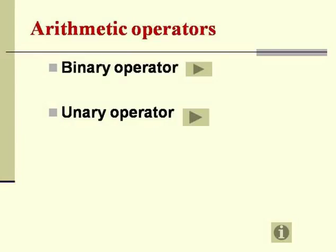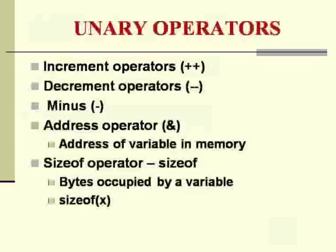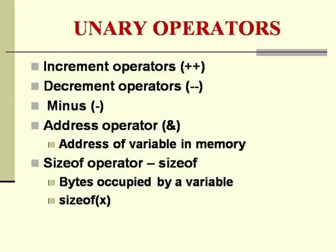Binary operators are ones which require a minimum of 2 operands for their operation. Next, we have what is called the unary operators. Unary operators require only 1 operand for their operation. They cannot be used for an operation on 2 values at a time. In unary operators, there are many classifications: you have increment operators, decrement operators, the simple minus sign, address operator and sizeof.